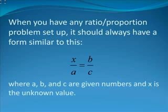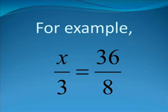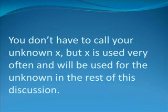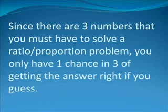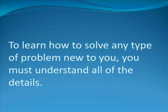Once you have any ratio proportion problem set up, it should always have a form similar to this: X divided by A equals B divided by C, where A, B, and C are given numbers and X is the unknown value. For example, X divided by 3 equals 36 divided by 8. It is important to recognize that if the number diagonally across from X is not the correct number, then you will get the wrong answer. Since there are three numbers that you must have to solve a ratio proportion problem, you only have one chance in three of getting the answer right if you guess.